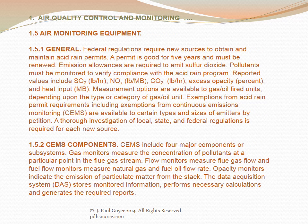Federal regulations require new sources to obtain and maintain acid rain permits. A permit is good for five years and must be renewed. Emission allowances are required to emit sulfur dioxide. Pollutants must be monitored to verify compliance with the acid rain program. Reported values include SO2 pounds per hour, NOx pounds per 1000 BTUs, CO2 pounds per hour, excess opacity in percent, and heat input in 1000 BTUs.